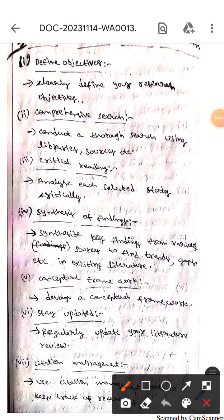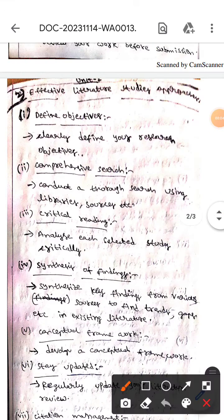Hello guys, how are you? Today we are here to discuss effective literature studies approaches. The first one is define objectives - here we should clearly define your research objectives. The next one is comprehensive search - here we should conduct a thorough search using library sources.